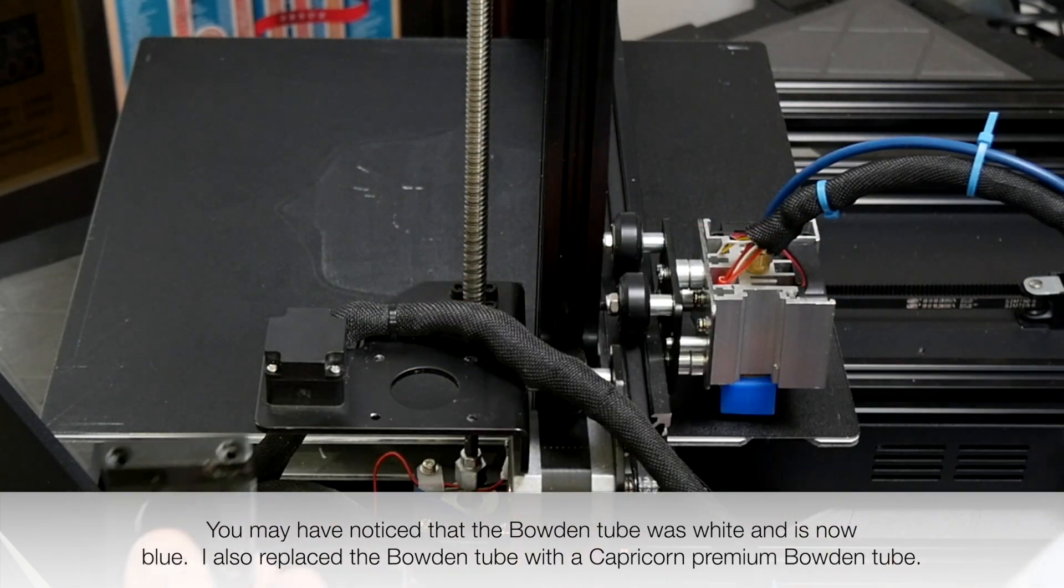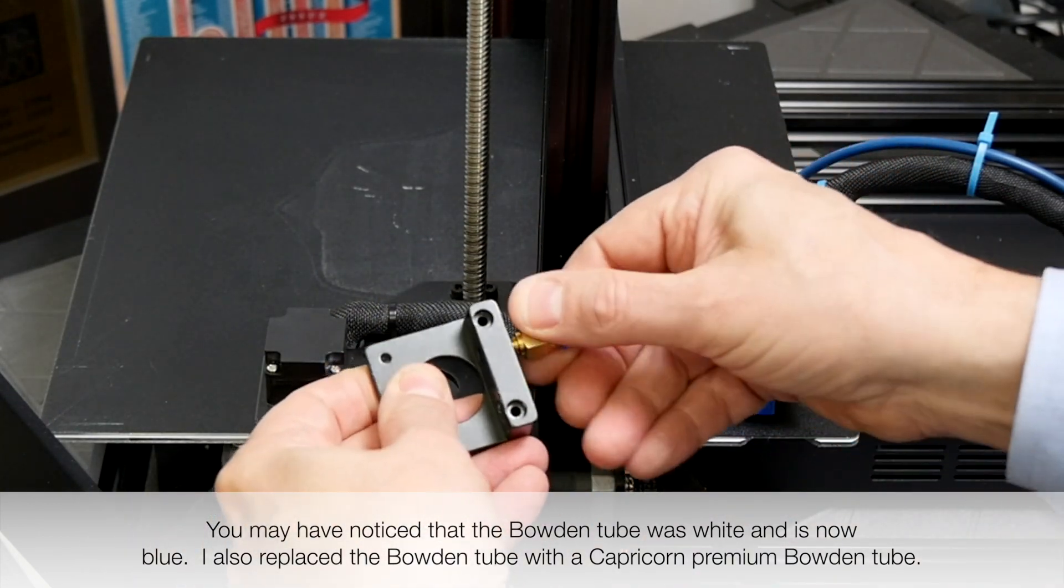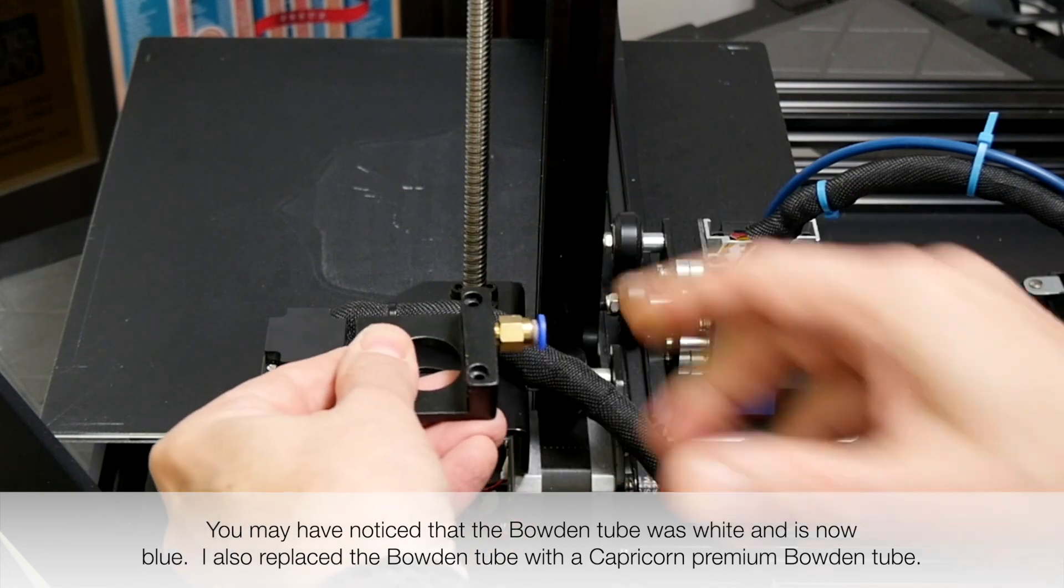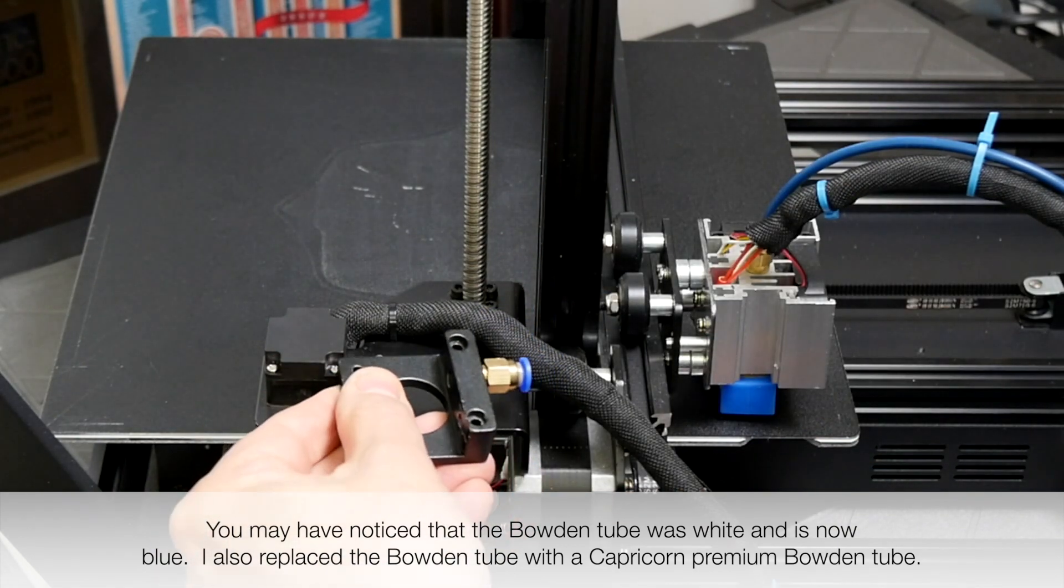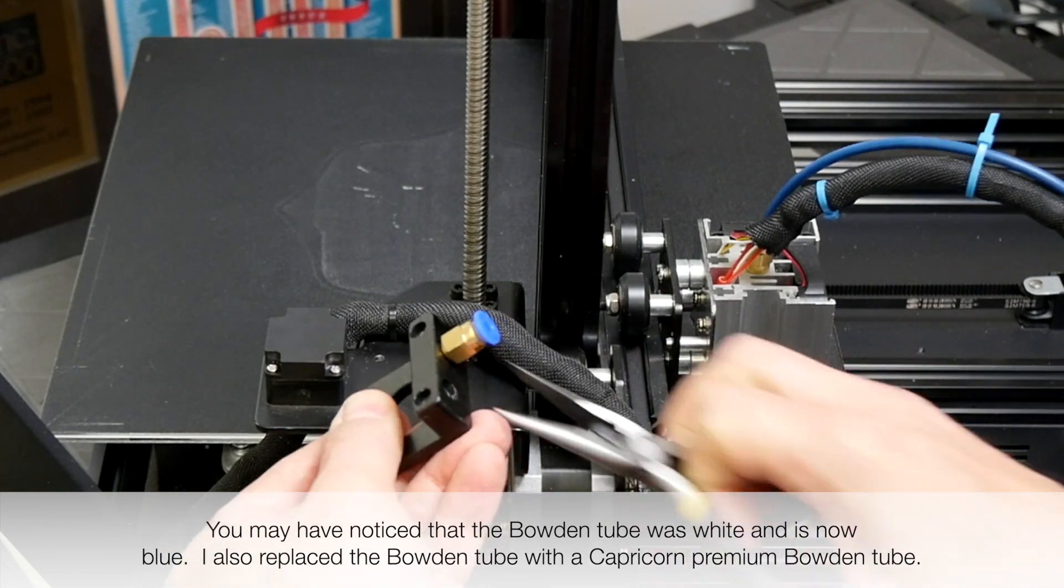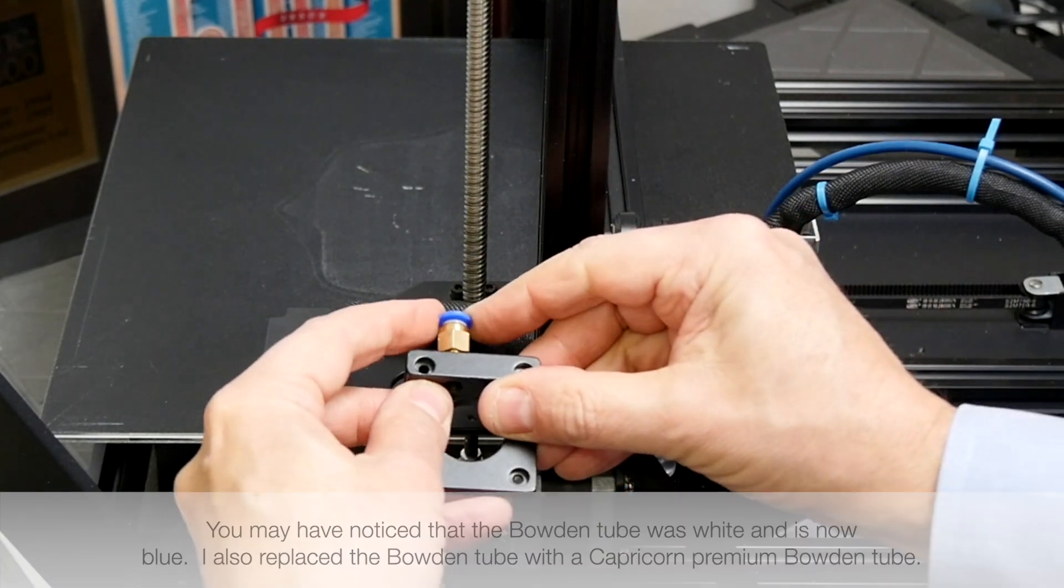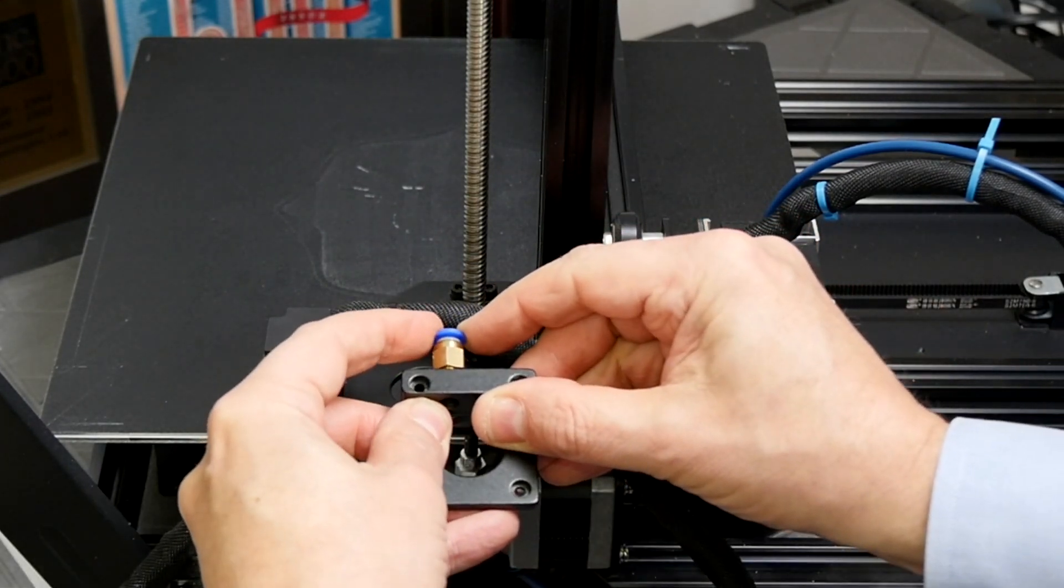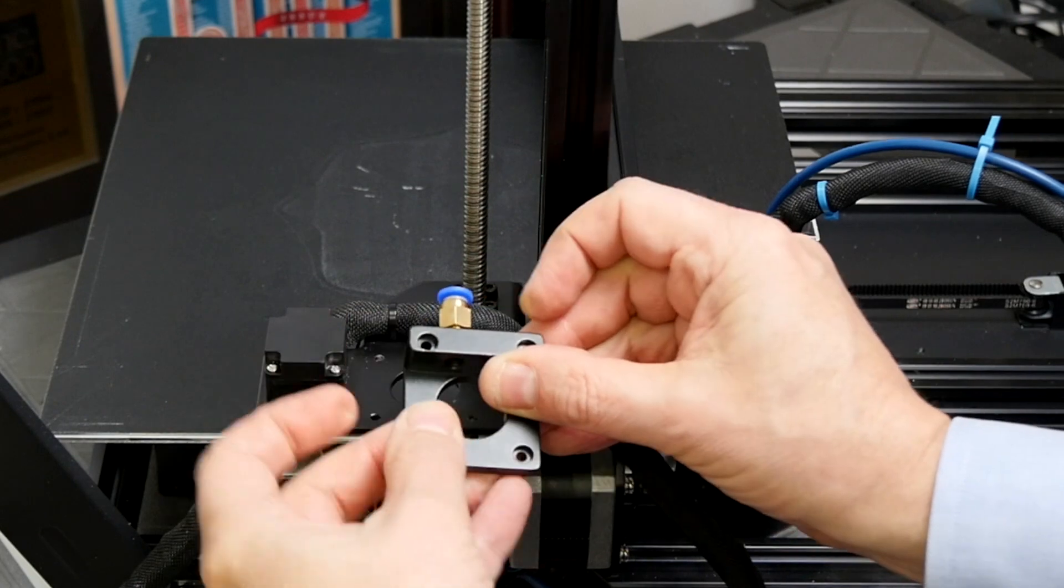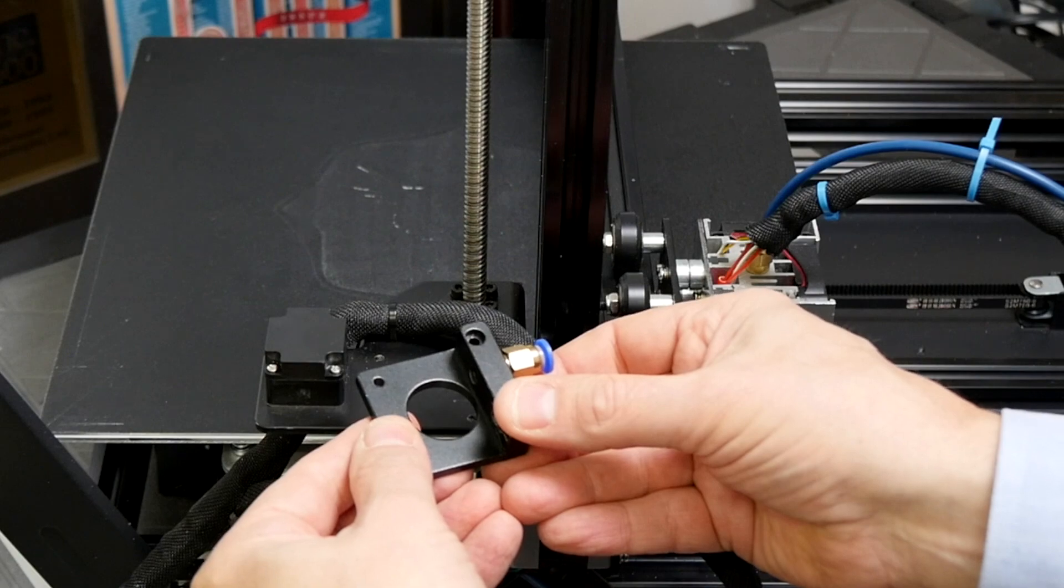But before doing that, we're going to take and add the Bowden coupler to the new extruder. And we will tighten this with a needle nose pliers just a little bit. The way these work, once again, is you press in on the blue part that releases it, and when you release that, it will lock onto the Bowden cable.